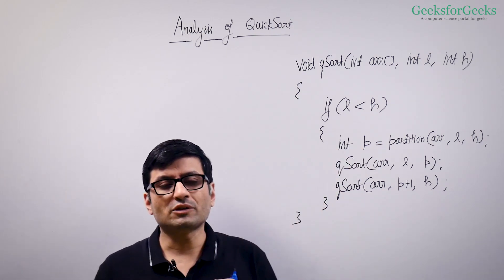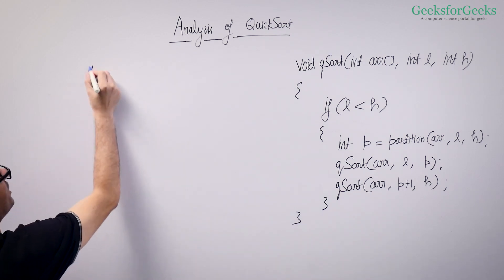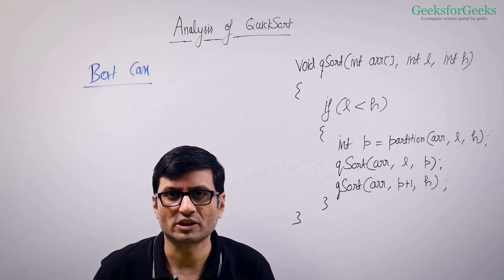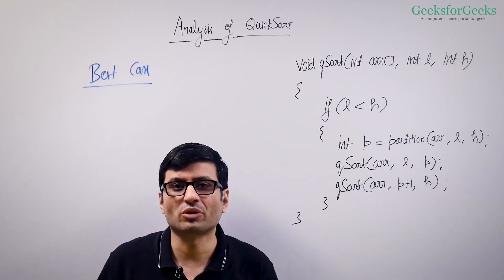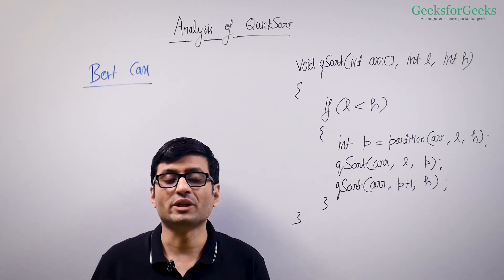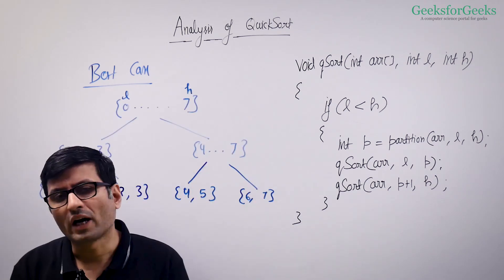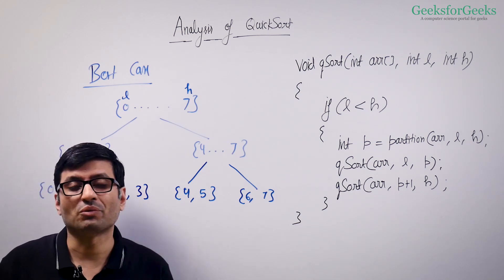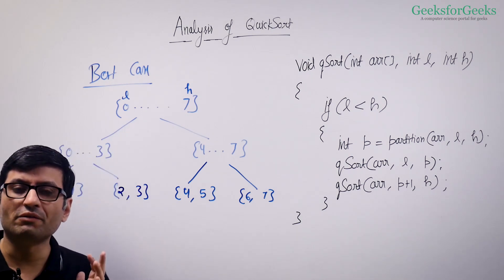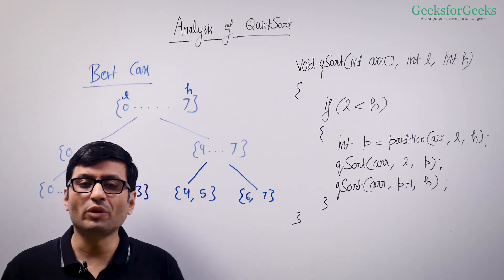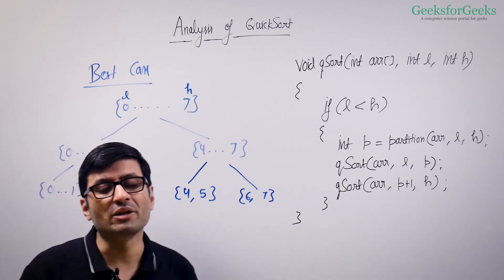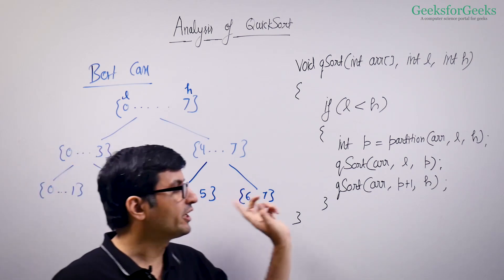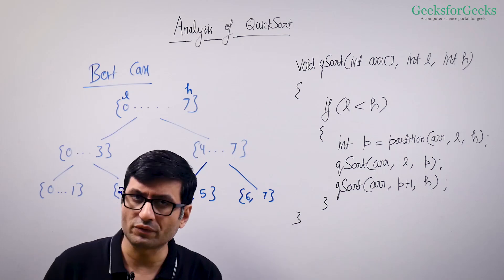Let us first talk about the best case of QuickSort. In general we never analyze algorithms for best case — it's not recommended — but for QuickSort it's a good idea to analyze the best case so that we get some idea about the average case. In best case, the input array is divided into two halves in every recursive call. The pivot is always picked in such a way that it is the middle element value-wise, putting half elements on left and half elements on right. Since we are considering Hoare's partition, the pivot itself is not fixed — it can go anywhere.